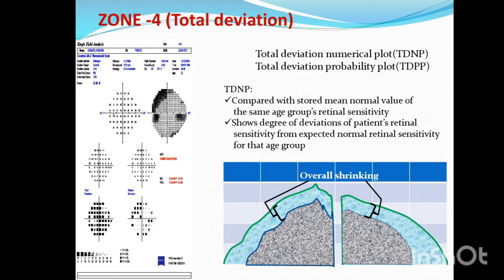The total deviation is the overall shrinkage compared to a normal population. For example, if the patient is a 40-year-old male with glaucoma doing a right eye scan, the machine has normative data stored. The age-matched normal data for a 40-year-old male is compared. Any depression or shrinkage from that normal is shown in the total deviation plot — both as a numerical plot and a probability plot.